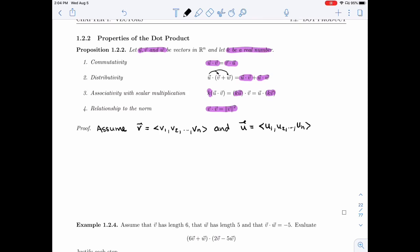So in property 1, I want to compare u dot v and v dot u. Let's spell them both out. So u dot v is u1 v1, u2 v2, v2, v_n, v_n.